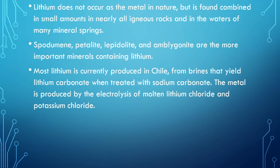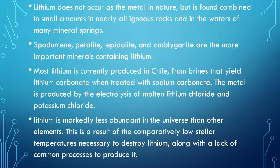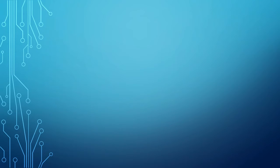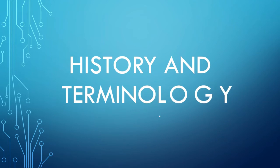The metal is produced by the electrolysis of molten lithium chloride and potassium chloride. Lithium is markedly less abundant in the universe than other elements. This is a result of the comparatively low stellar temperatures necessary to destroy lithium, along with a lack of common processes to produce it.